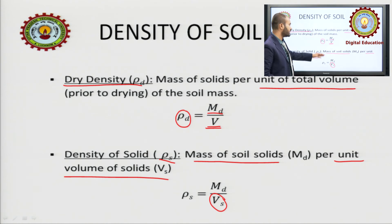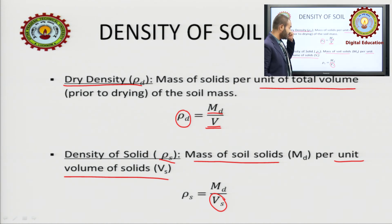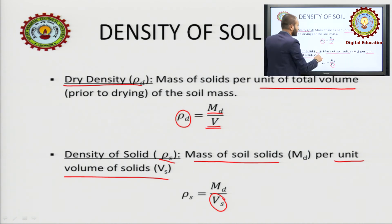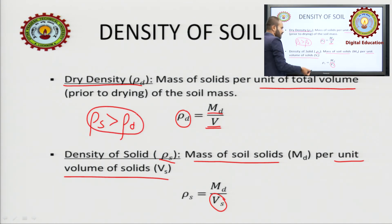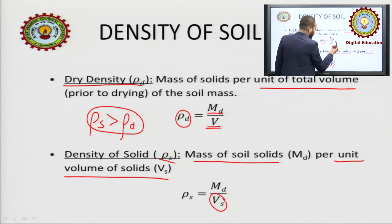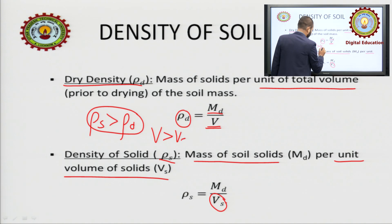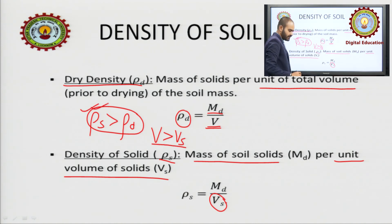We can understand from this that rho_s will be greater than rho_d. Why is it so? Because Vs is smaller than V — we know that V will be greater than Vs. So this is an important relation.